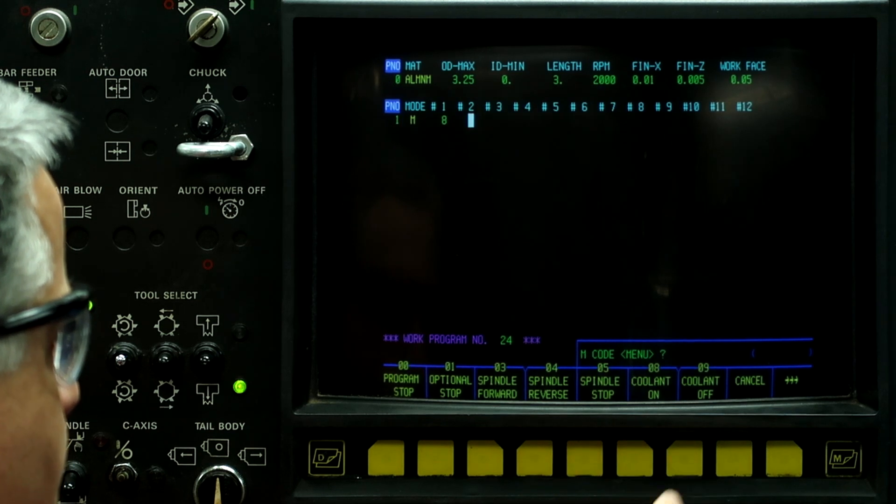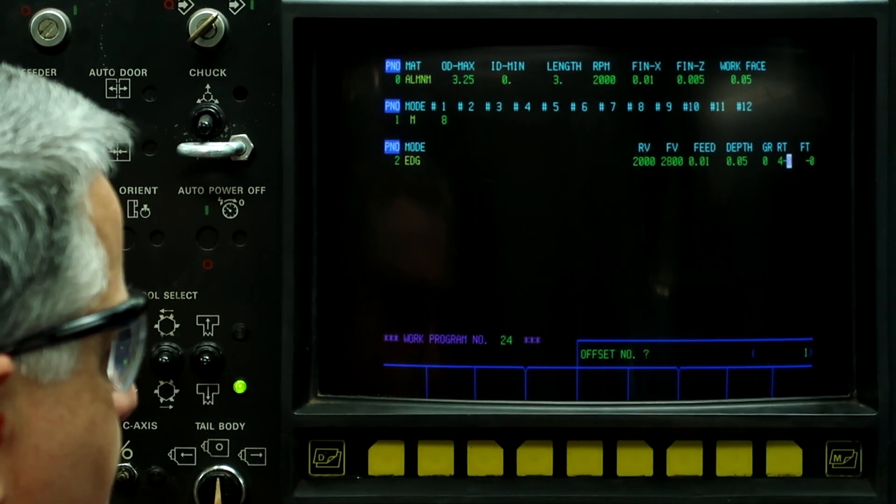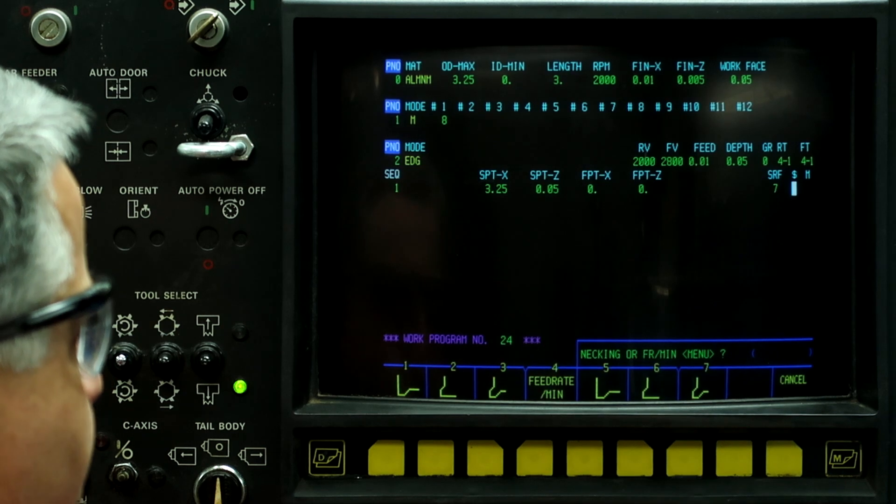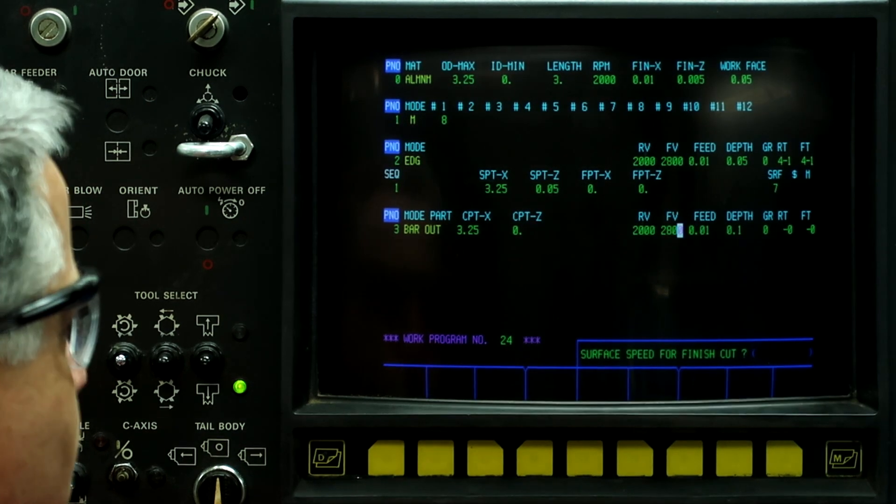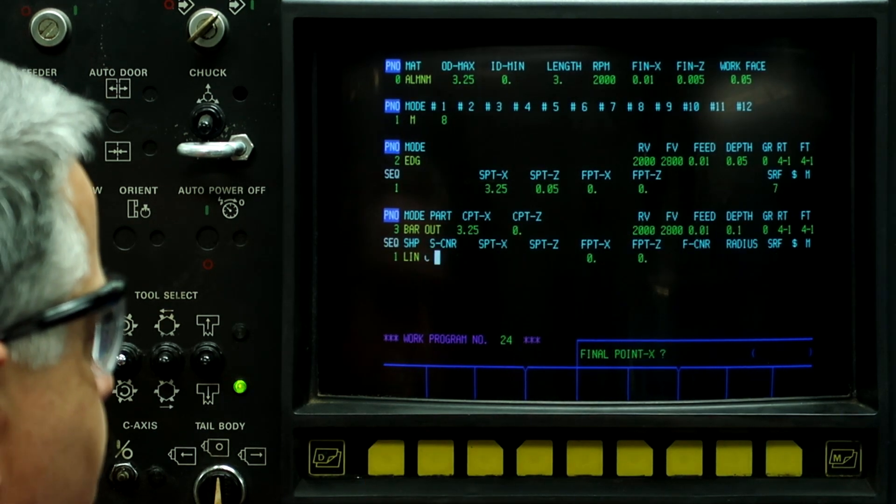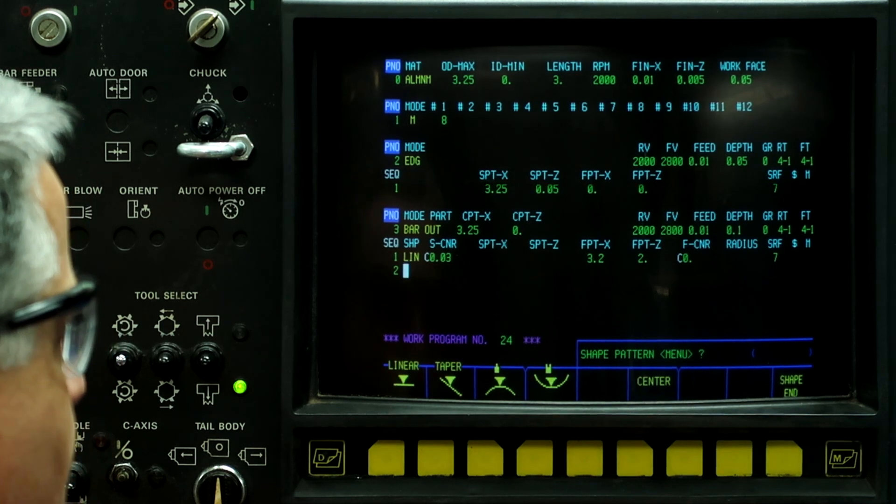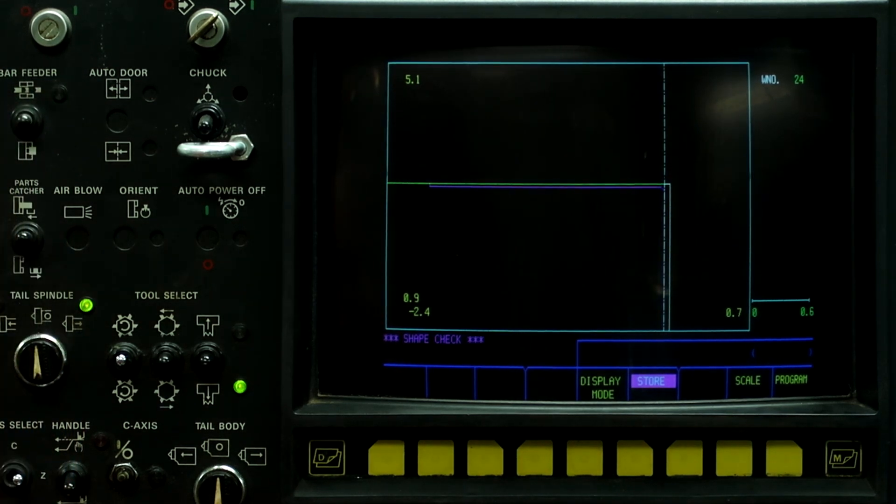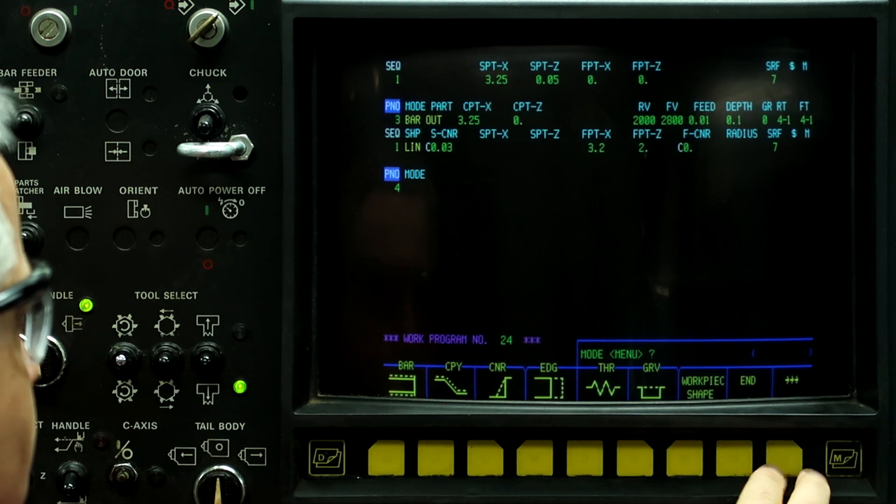The first thing we're going to do is turn on the coolant. Next thing we're going to do is face the part. Auto. Tool 4. 3.25, 0.05. Bar out. 3.25. Auto. Tool 4. Linear. 30 thousandths chamfer. 3.2. 2 inches back. And shape in. Right button. Figure check. There's our face, and there's our OD. Go back to program.